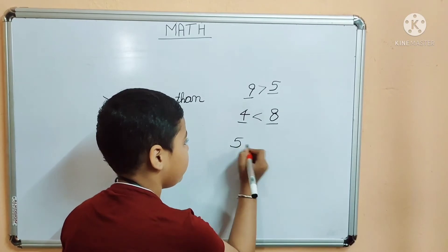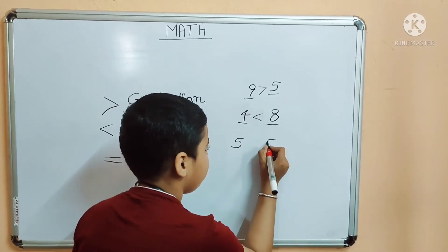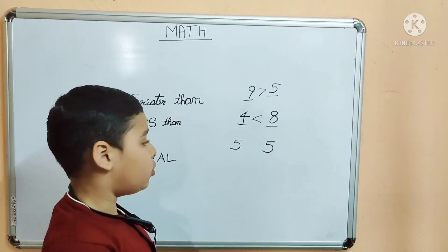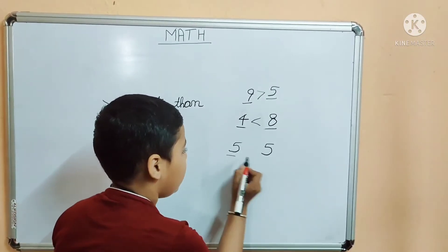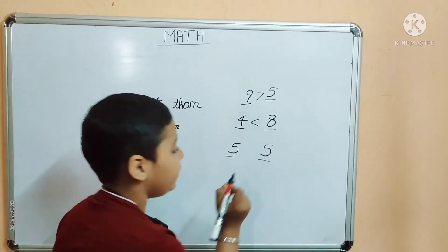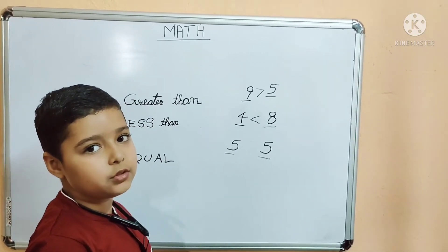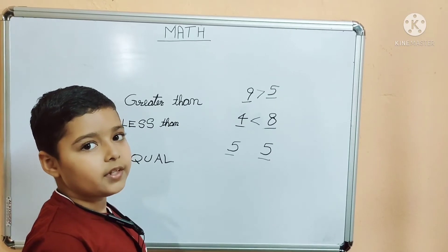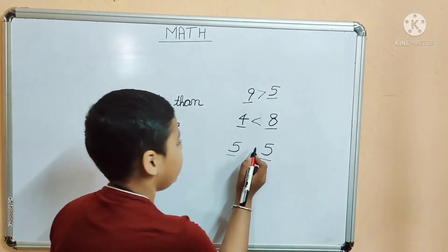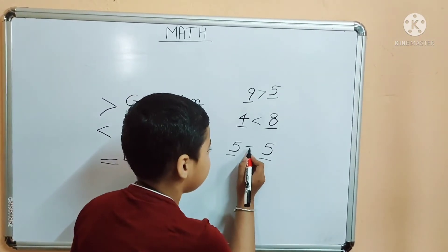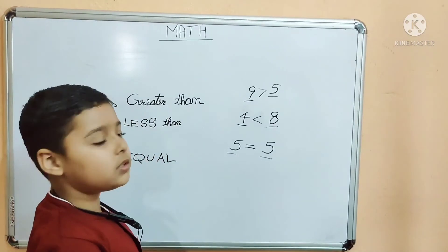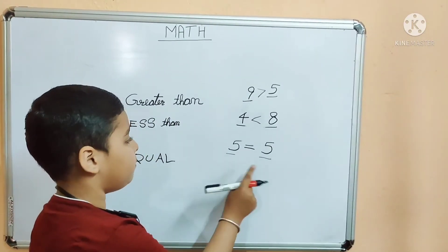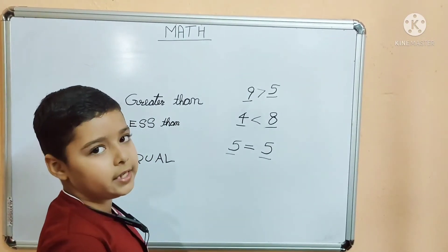Let's take another example. 5 and 5 — both numbers are the same here. So which sign do we take here? Yes, it is the equal sign, because both numbers are the same on both sides.